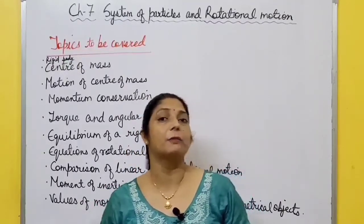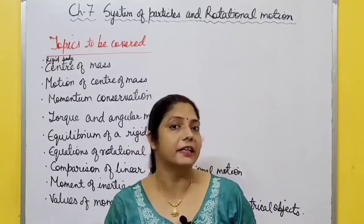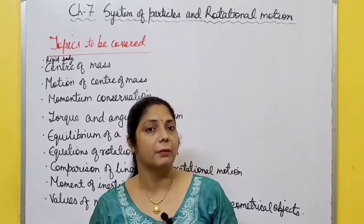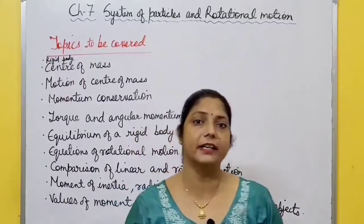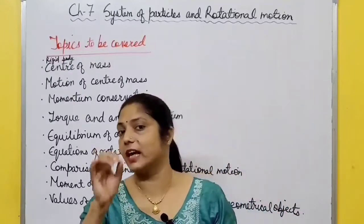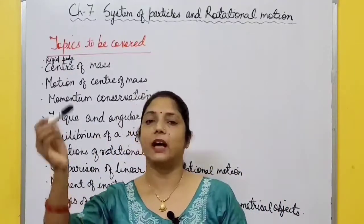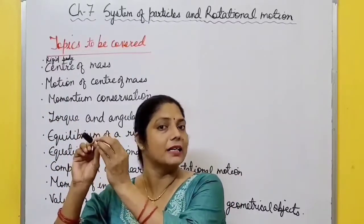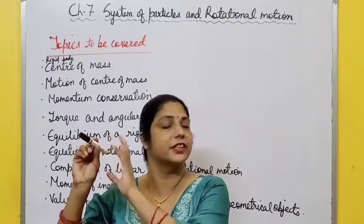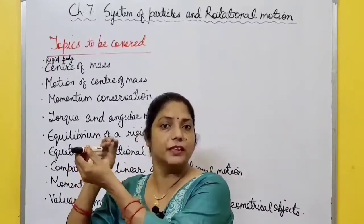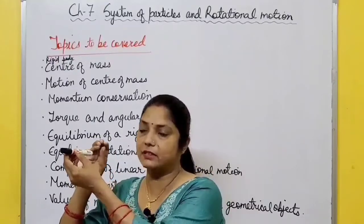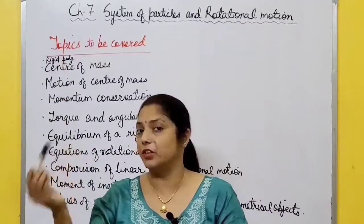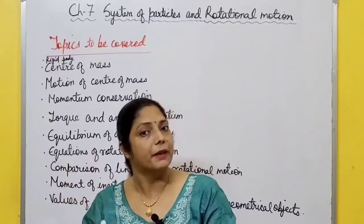Up to chapter 6, we discussed about particle motion - particle velocity, particle acceleration in one, two, or three dimensions. A particle is a body which has finite mass but its size and internal structure can be ignored. For example, this marker - I assume this marker is a particle whose mass is finite but its size and internal structure can be ignored. If you apply some force on this marker, it moves from one position to another.